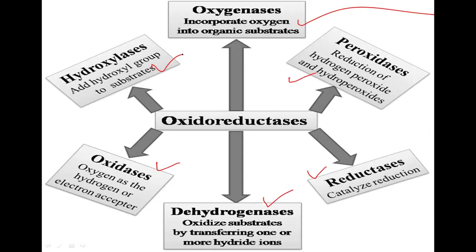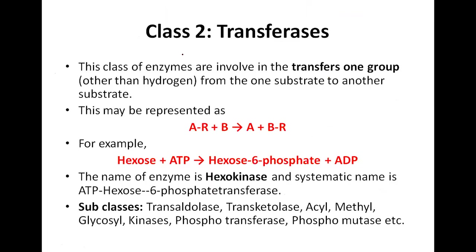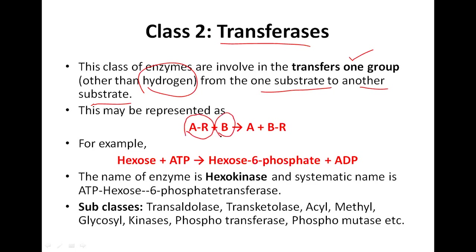The second class according to the IUB system is transferases. These enzymes are involved in the transfer of a chemical group — other than hydrogen — from one substrate to another. In the general reaction, reactant A carries an R group, which is transferred to reactant B, giving two products: A and B-R. This type of reaction is termed a transferase reaction.